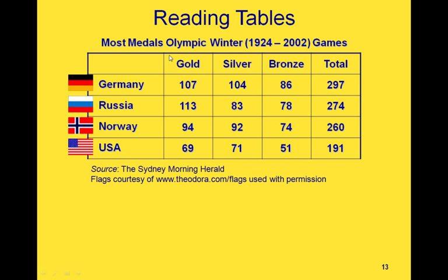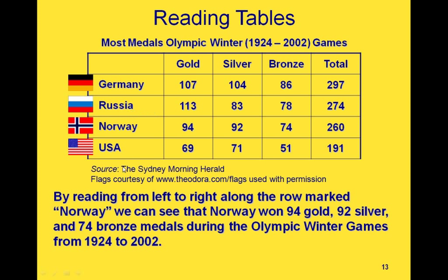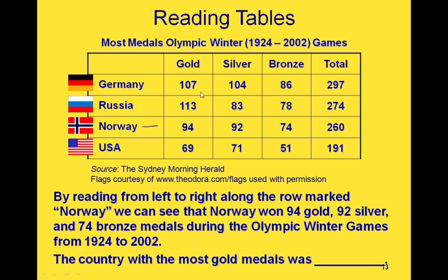We're going to talk just a little bit about reading tables. This is a table of the four top medal winners in the Olympic Winter Games between 1924 and 2002. If we want to look at a specific value in this table — for example, if we look at the row marked Norway — we can see how many of each type of medal Norway won: 94 gold, 92 silver, 74 bronze, and a total of 260 medals. Another thing we can do with the table is compare the whole numbers. So if we want to know the country with the most gold medals, we look in the column under gold and find the largest number, which would be 113. To find which country had 113 gold medals, we look to see which row that's in — that was the Russia row. So the country with the most gold medals was Russia.